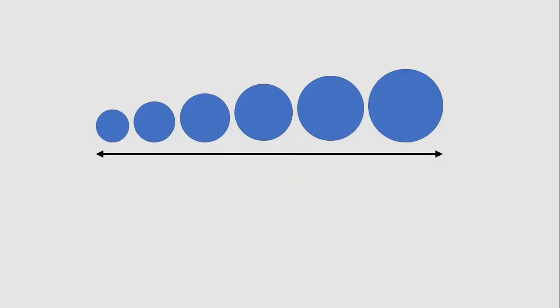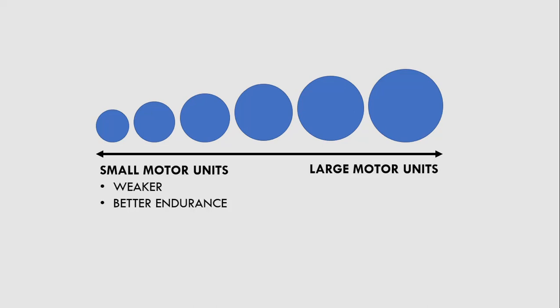The size principle refers to the concept of what order muscle fibers are recruited. Essentially, we have a range of muscle fibers in each muscle from smaller and weaker fibers to bigger and stronger fibers. The smaller muscle fibers are generally weaker but have better endurance, while the larger fibers are stronger but can only produce force for a short period of time before they fatigue.